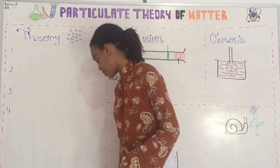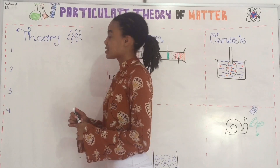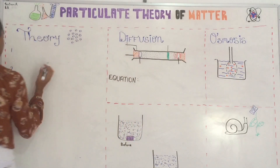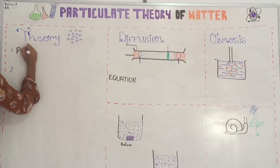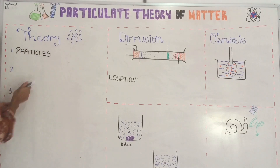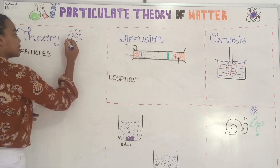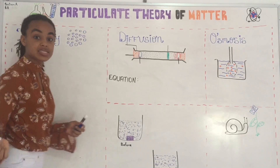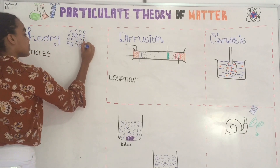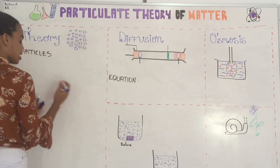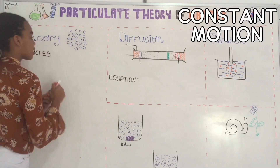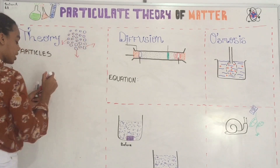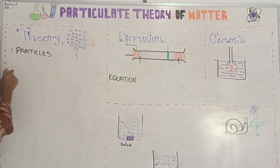So we're going to be looking at the particulate theory of matter. Now the particulate theory of matter has four main rules. It says that matter is made up of particles. I drew some particles that you would see in matter depending on the state, and in the next video we will be learning about different states of matter. So matter is made up of particles, and these particles are in constant motion. That's the second statement in the particulate theory of matter.